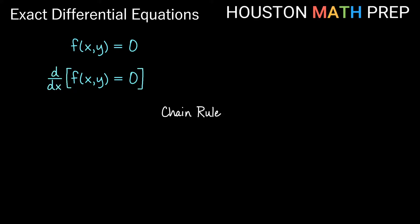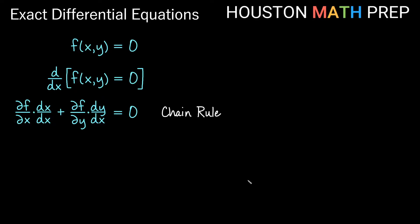The first part of the chain rule — because f is a function of x and y — we get the partial derivative of f with respect to x times dx/dx, plus the partial derivative of f with respect to y times dy/dx. On the right side, we would still get equal to zero. If we simplify these partial derivative notations to subscript notation, we get fx plus fy times dy/dx equals zero.